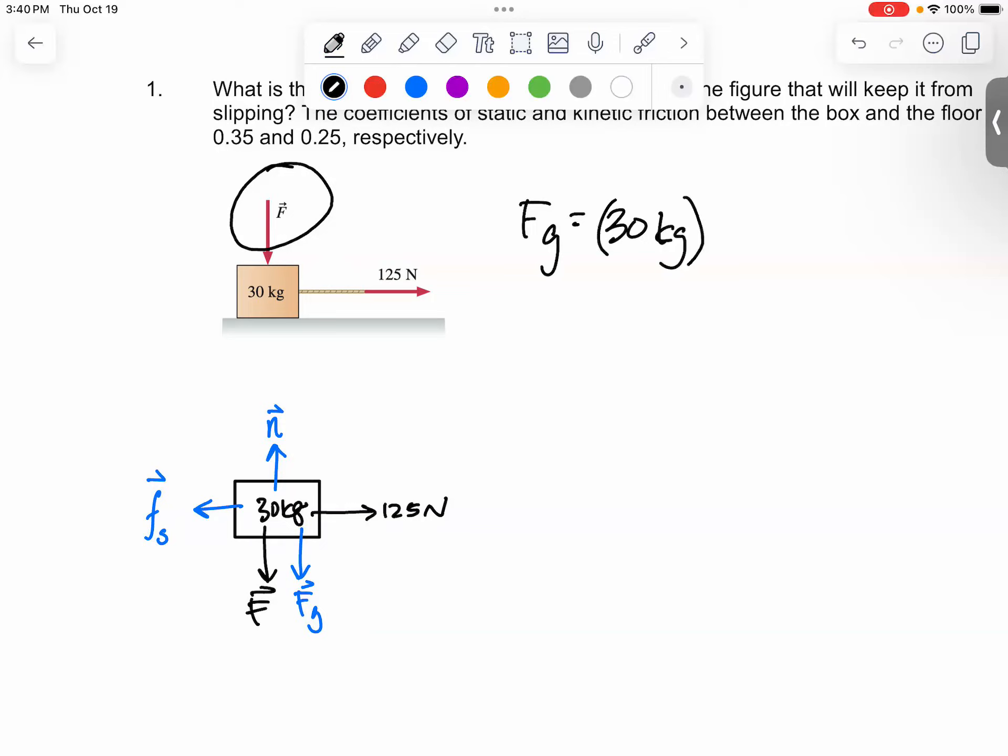It'll be Fg. The formula is F equals m times g, right? The mass is 30 kilograms, so we multiply by negative 9.8 meters per second squared. So therefore, let me get my calculator.